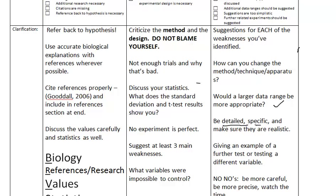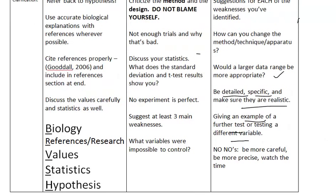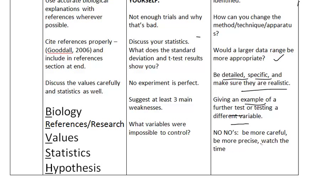Be detailed, specific. If you're naming new kinds of instruments, make sure they're actual real things. Don't say in the future I hope they invent something like this. Give an example of further tests or testing a different variable as well. Try to avoid saying I'm going to be more careful next time, or I'm going to be more precise, or I'm going to watch the time more carefully, or I'm going to make sure my partners are paying attention, I'm going to make sure they're not eating in the lab. Stuff like that, those are amateur mistakes. We are professionals.